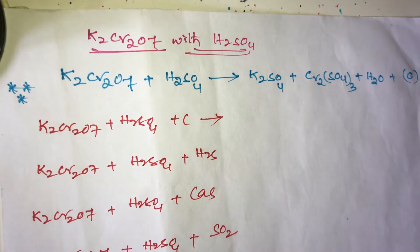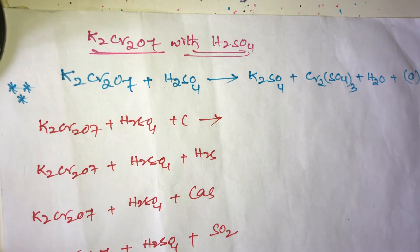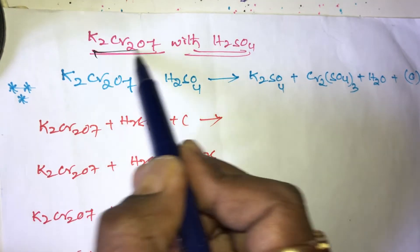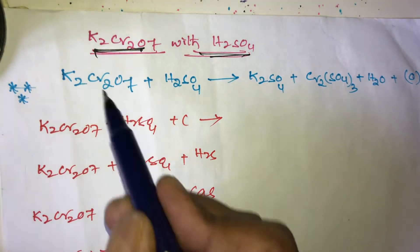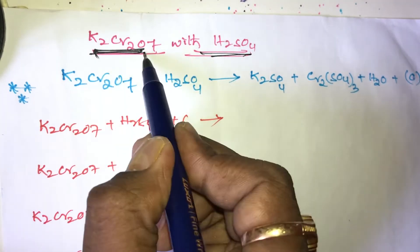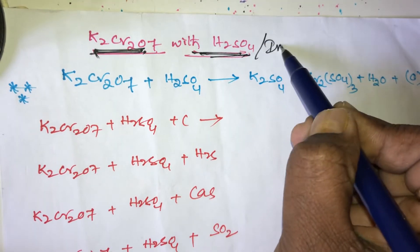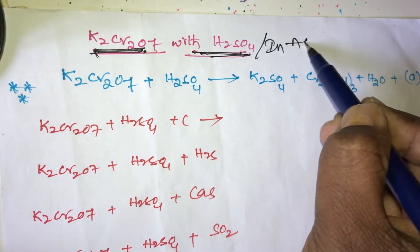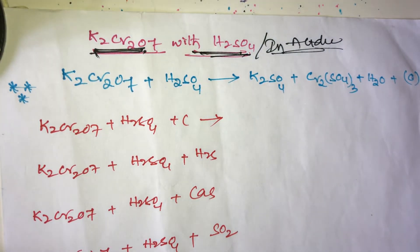Hello friends. Now the very most important oxidizer is potassium dichromate — K2Cr2O7 with H2SO4, or in acidic medium. It is also a very most important oxidizer, students.